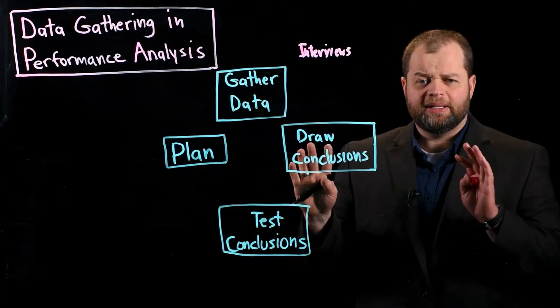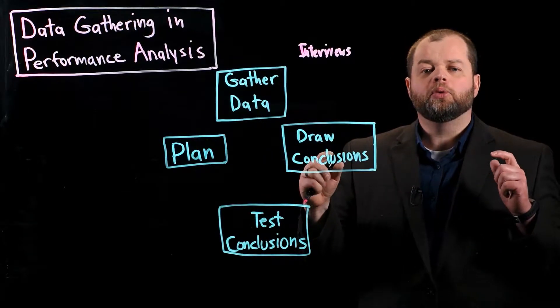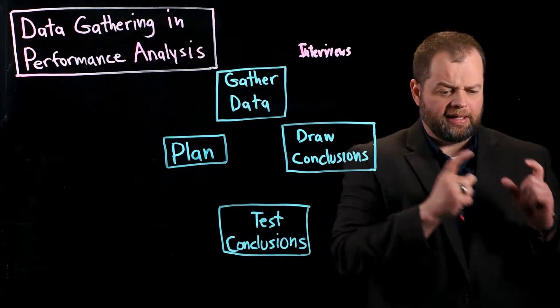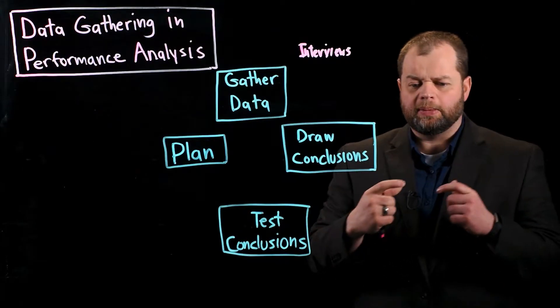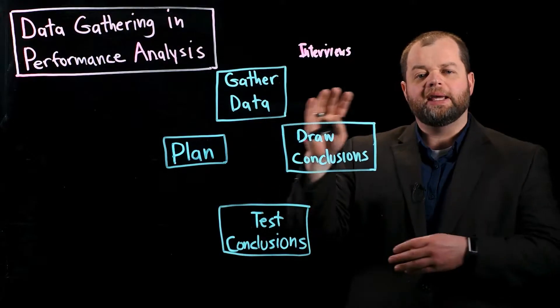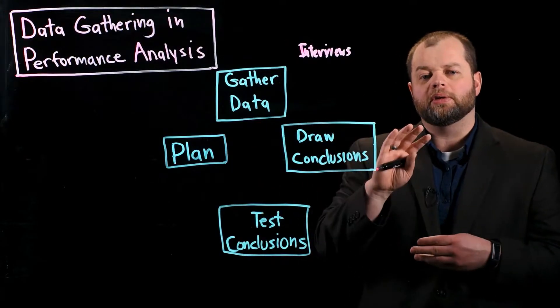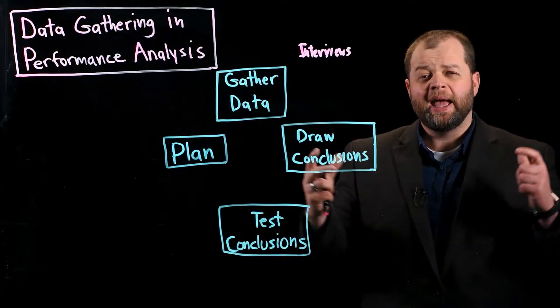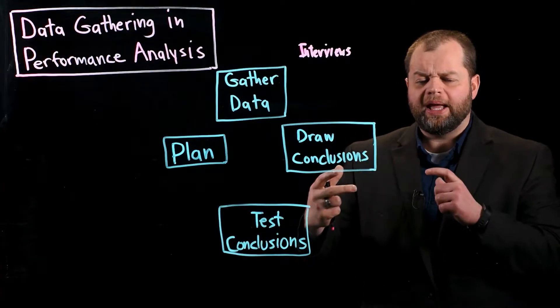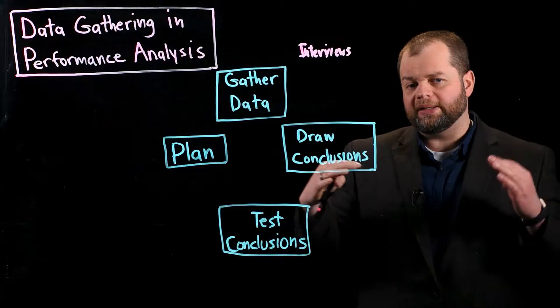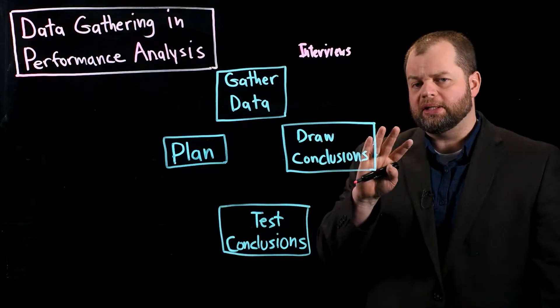So one thing to consider as you're doing this analysis, by the way, is that you're not necessarily going and gathering data about the organization and then coming back and then going and gathering data about the environment and then coming back. Really, you're sort of gathering data about all of these different components of the performance analysis and you have to tease those apart as you go. What's the cause? What are the actual gaps? You're pulling all that together as you go.